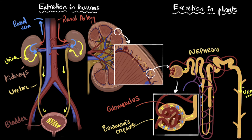So to summarize: the first part of filtration happens from the glomerulus into the Bowman's capsule. But then we realize too many things have gone out, so we need to reabsorb a few things — and the rest of the nephron handles that reabsorption. Finally, whatever remains is the urine that goes into the ureter, into the bladder, and comes out.